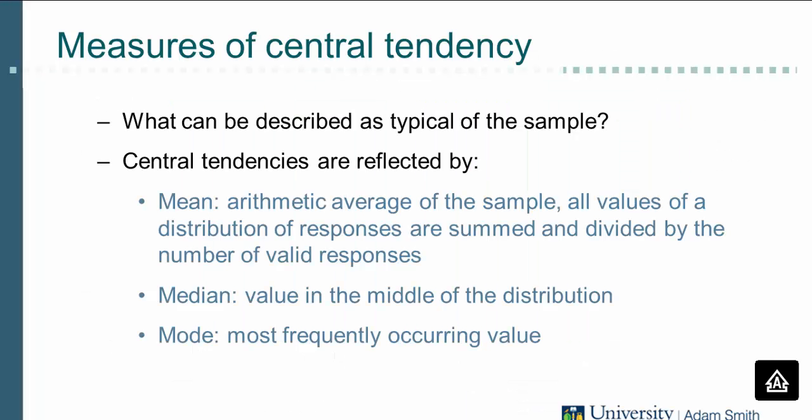Measures of central tendency provide summary information about what is typical of the sample. There are three types of central tendency measures: mean, median, and mode. Mean provides an average for the sample, median is the value found in the very middle of the distribution, and mode is the most frequently occurring value.